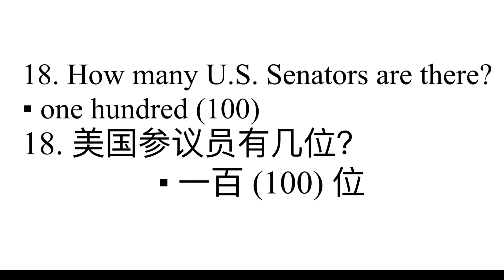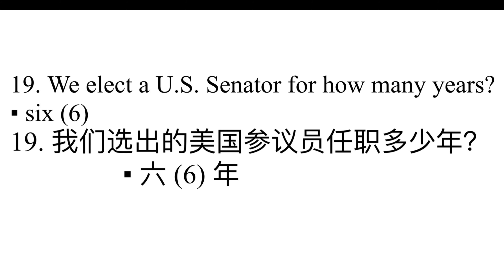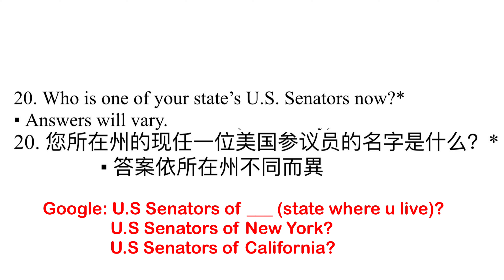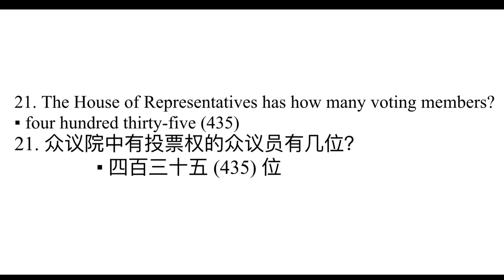How many U.S. Senators are there? 100. We elect a U.S. Senator for how many years? 6 years. Who is one of your state's U.S. Senators now? Answers will vary. The House of Representatives has how many voting members? 435.